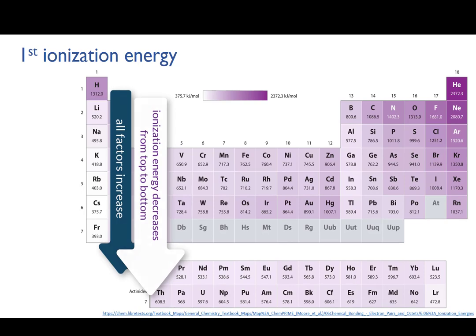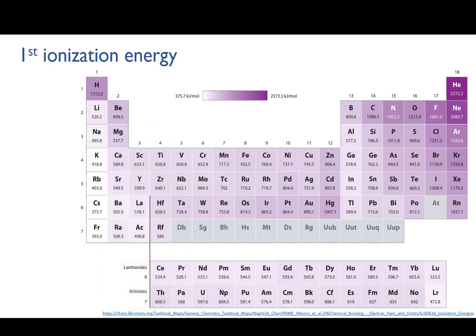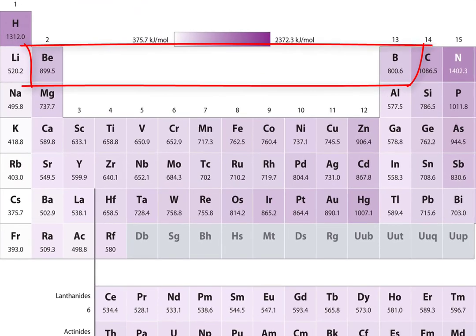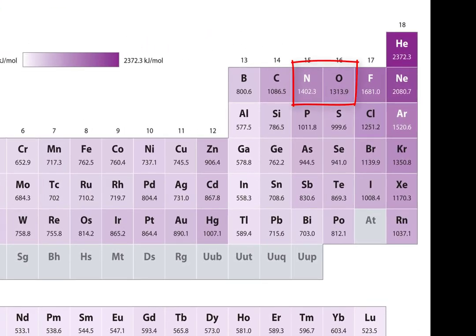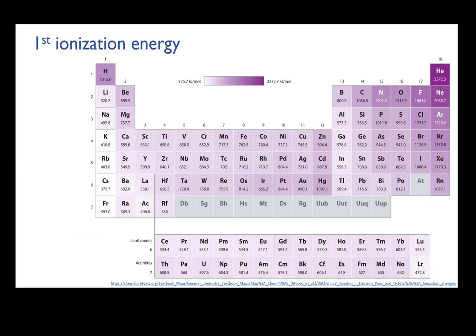So what about those little glitches, like that the first ionization energy of boron is actually slightly lower than that of beryllium? Or that that of oxygen is slightly lower than nitrogen? I'm going to leave that as a problem for you to think about and research. You might like to go back over what you know about atomic orbitals, SPD orbitals, and electron configurations as you ponder this.